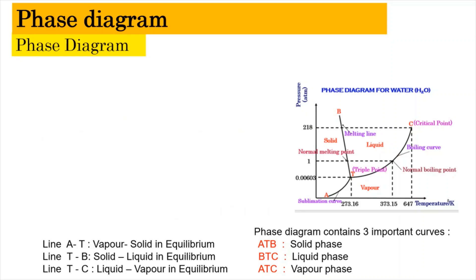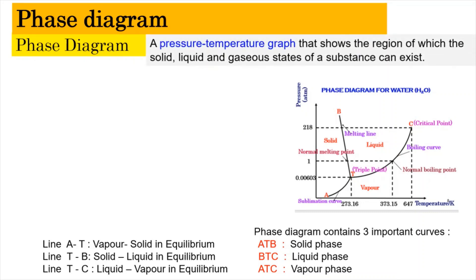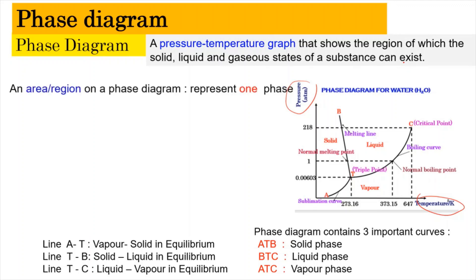Now we are going to look into the phase diagram. A phase diagram is basically a pressure-temperature graph that shows the region in which the solid, liquid, and gaseous states of a substance can exist. A region on the phase diagram represents one phase. The region A-T represents the solid phase, the region B-T-C belongs to the liquid phase, and the region A-T-C belongs to the vapor phase. The vapor phase is also known as the gaseous phase.